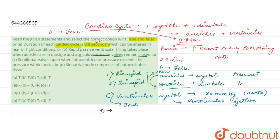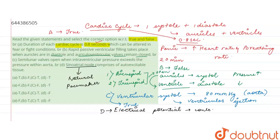The last statement says: the sinoatrial node comprises auto-excitable tissue. The sinoatrial node is also called the natural pacemaker of the heart. It creates electrical potentials required for the contraction of the heart. It has auto-excitable tissues that continuously generate electrical potential due to depolarization of its membranes. This electrical potential helps in the contraction of the heart. So statement D — the sinoatrial node comprises auto-excitable tissue — is also true.